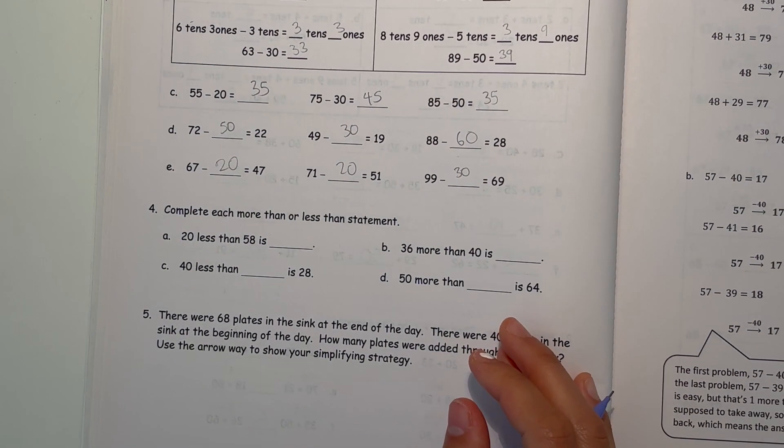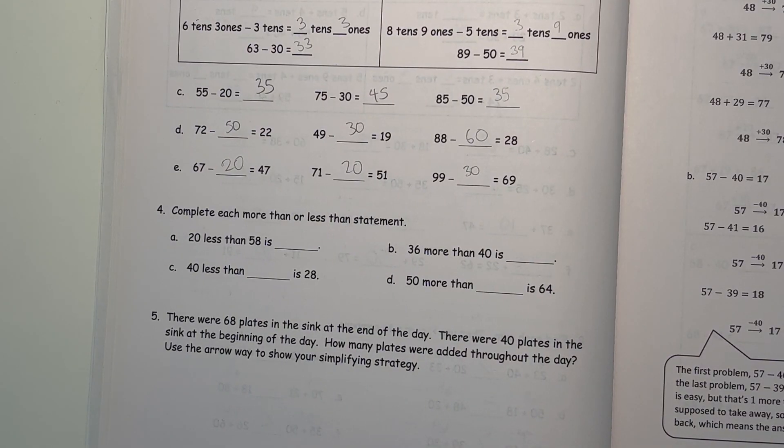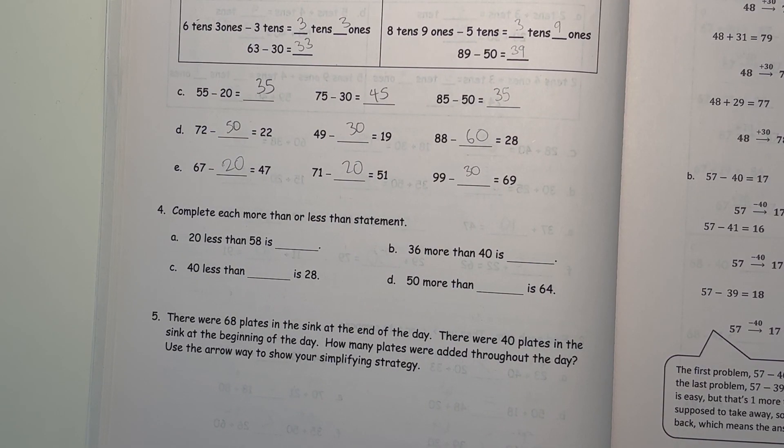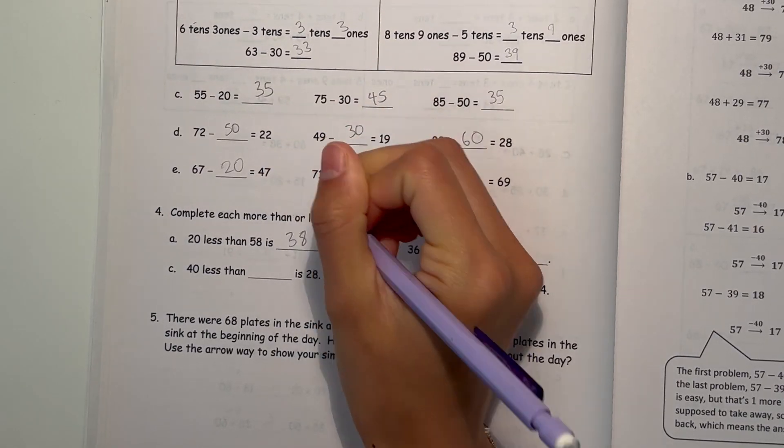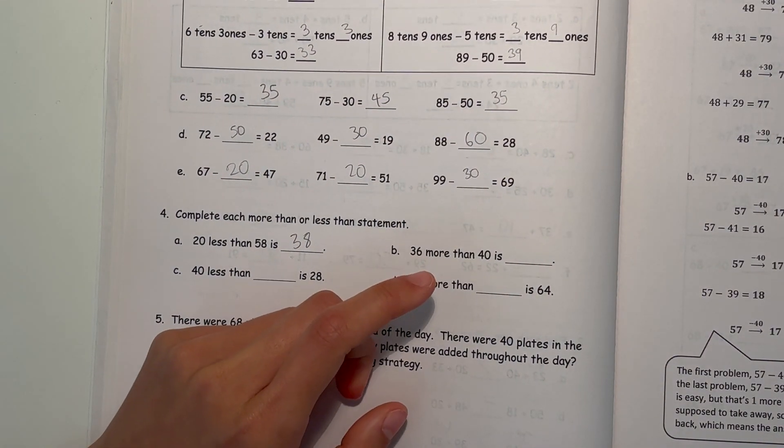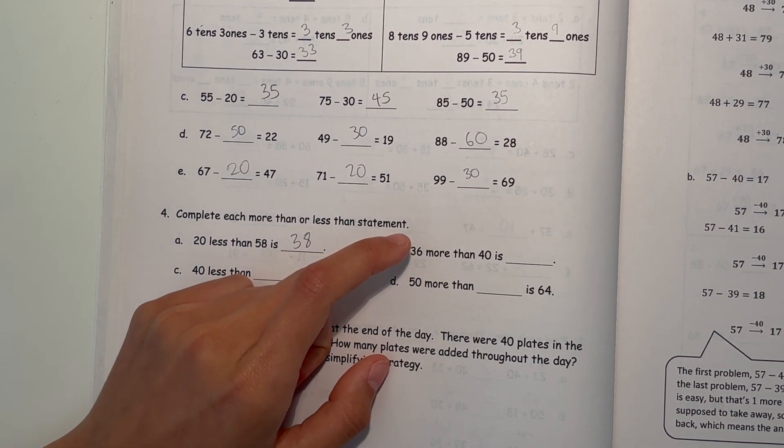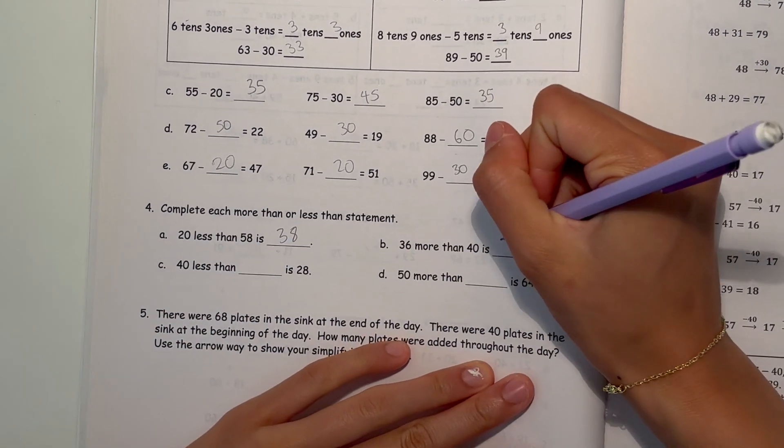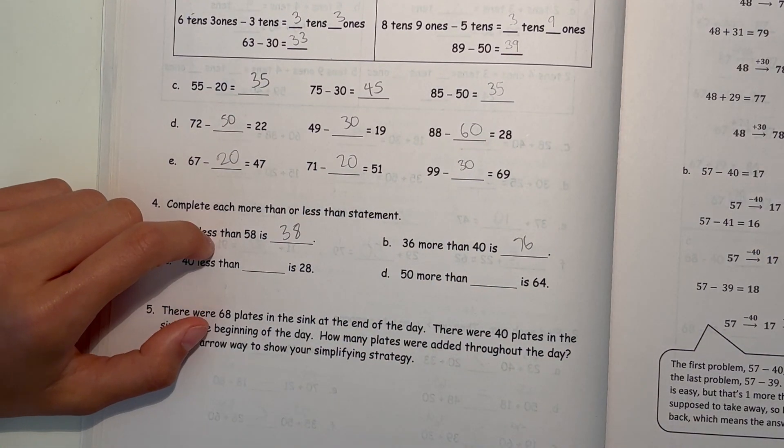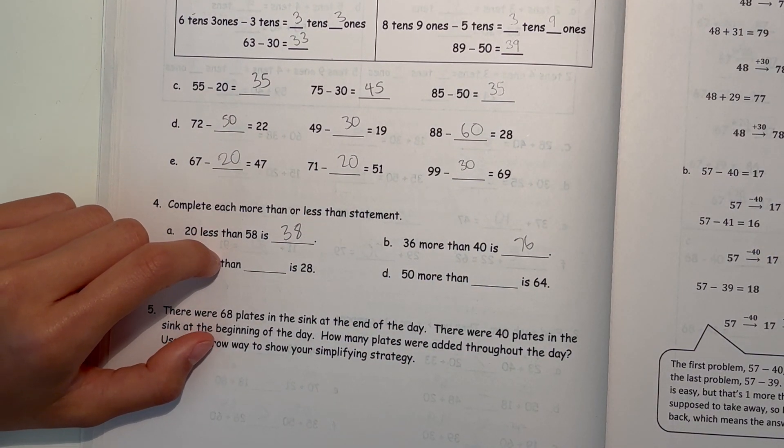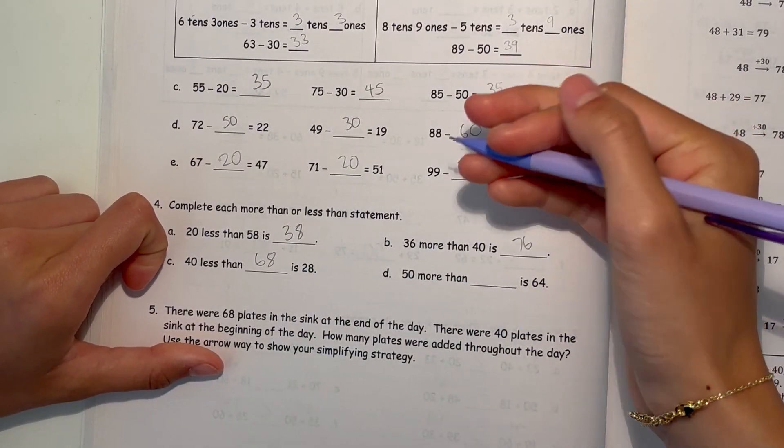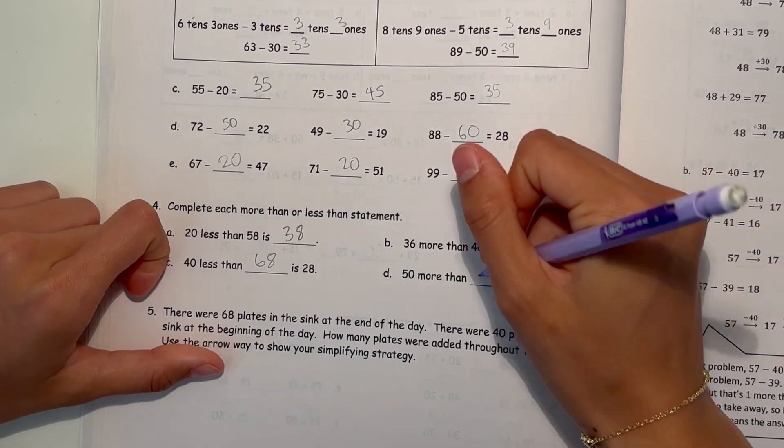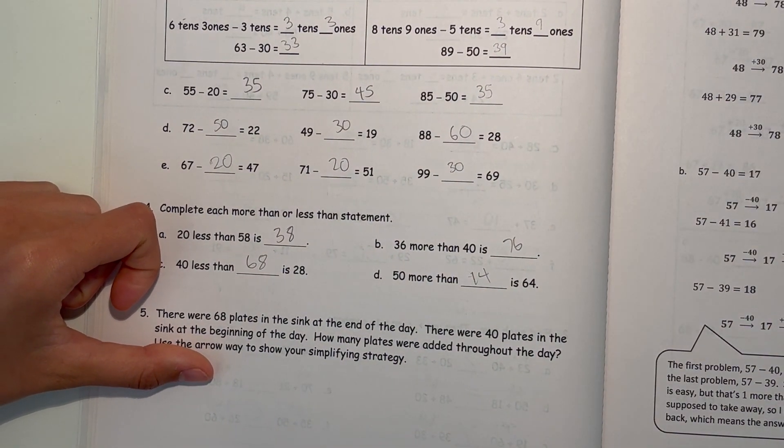Alright, so now number 4, complete each more than or less than statement. 20 less than 58 is, so 20 less is 58 minus 20, which is 38. Now B, 36 more than 40, so 36 plus 40 is 76. Now C, 40 less than blank is 28, so 40 plus 28 is 68. So 50 more than blank is 64, so that's 14, because 64 minus 50 is 14.